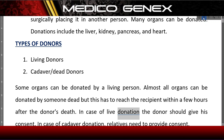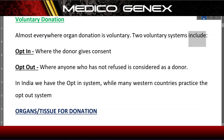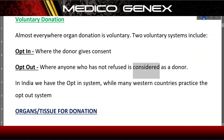In case of live donation, the donor should give consent. In case of cadaver donation, relatives need to provide consent. Organ donation is voluntary almost everywhere. Two voluntary systems include opt-in, where the donor gives consent, and opt-out, where anyone who has not refused is considered a donor. In India, we have the opt-in system.